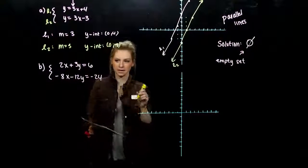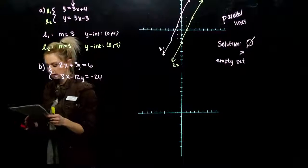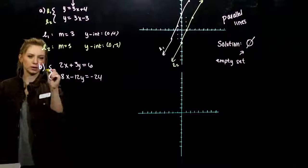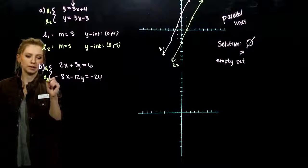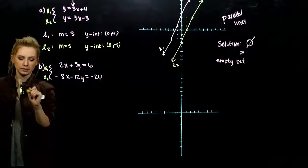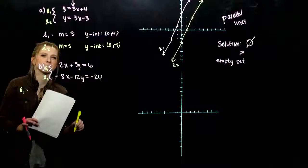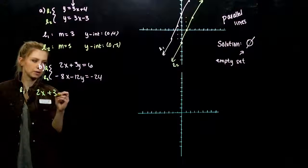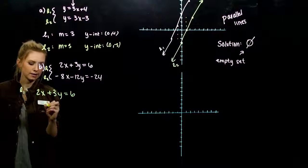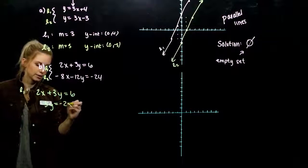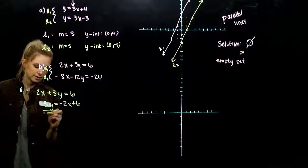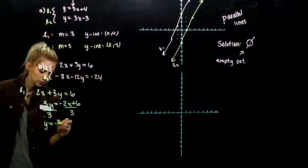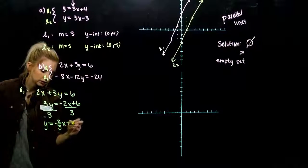Next one. These are not in the slope-intercept form, so we need to do a little bit of work. Again, I'm going to label them L1 and L2, so we can talk about them separately. So for the first one, 2x plus 3y is 6. I want to solve for y. I'm going to subtract 2x, divide by 3. So y is negative 2 thirds x plus 2.